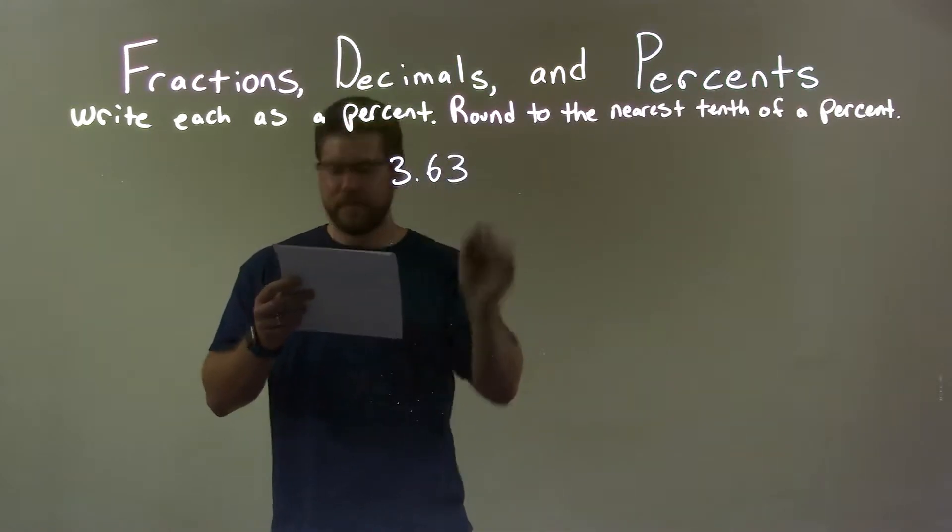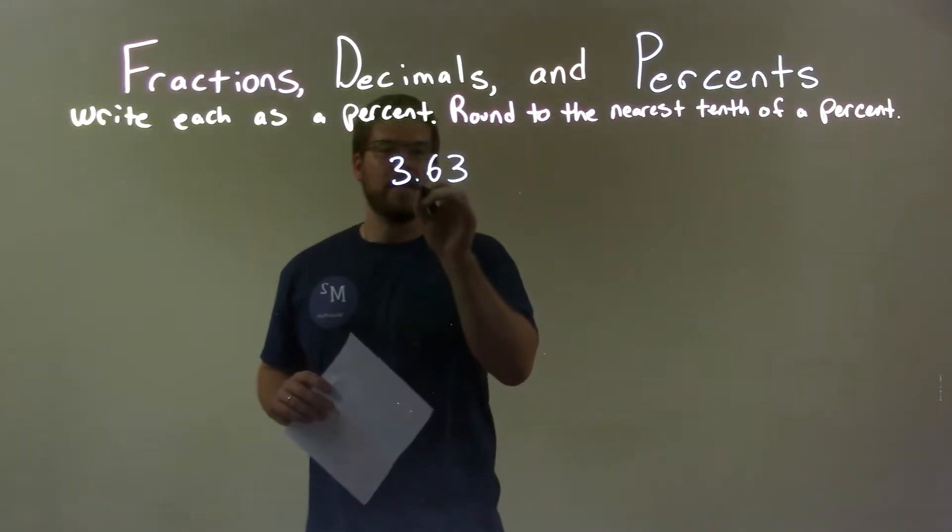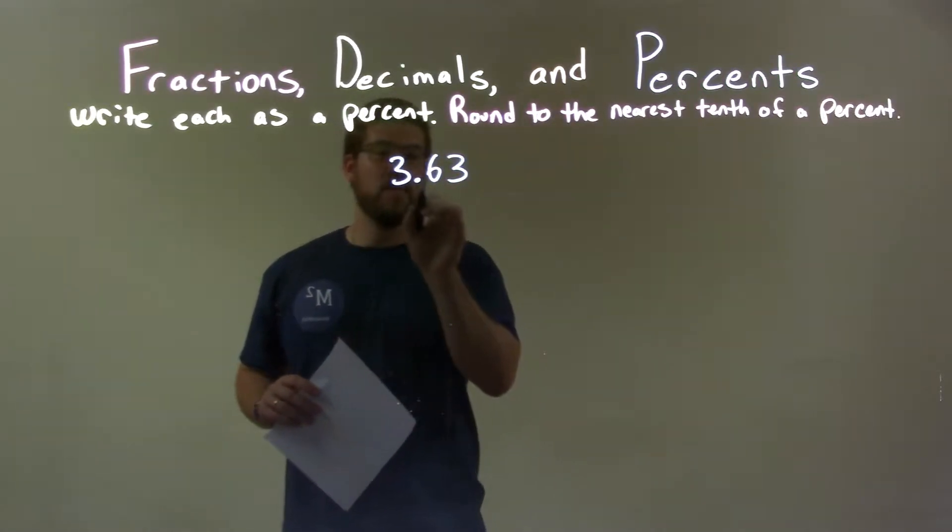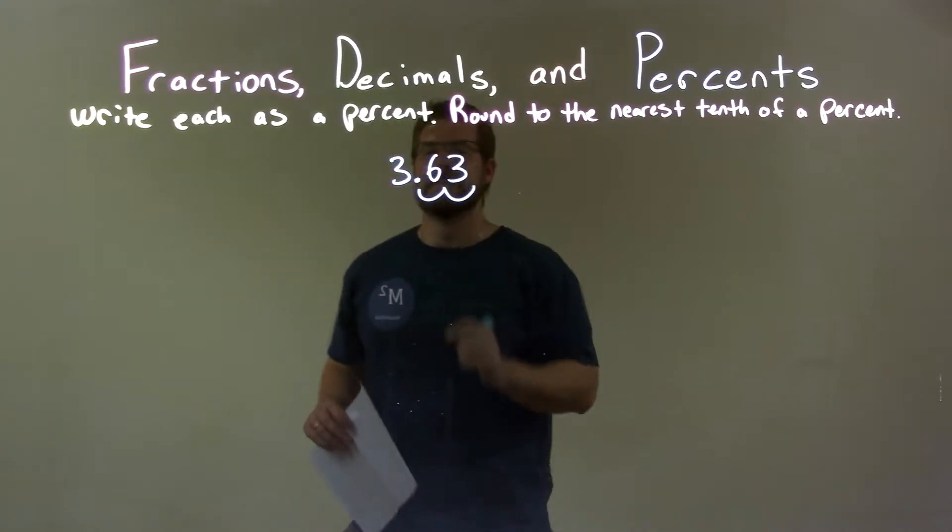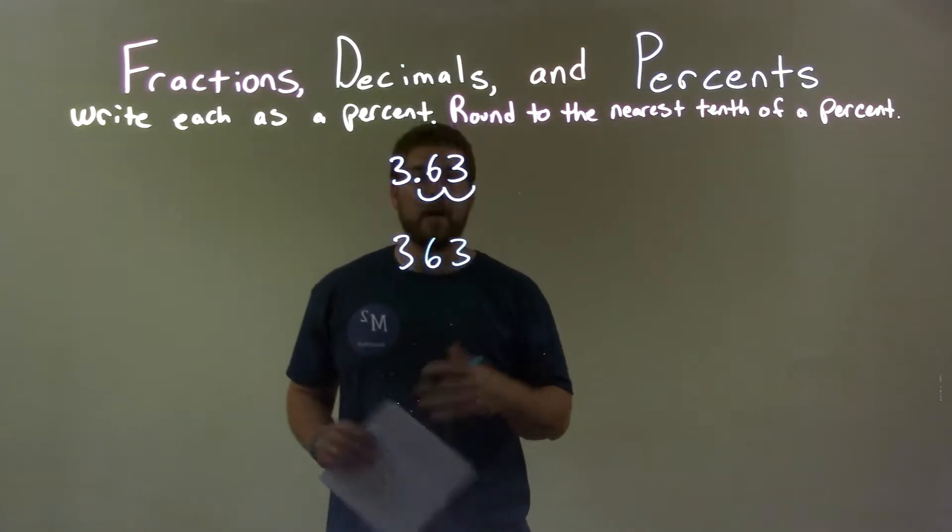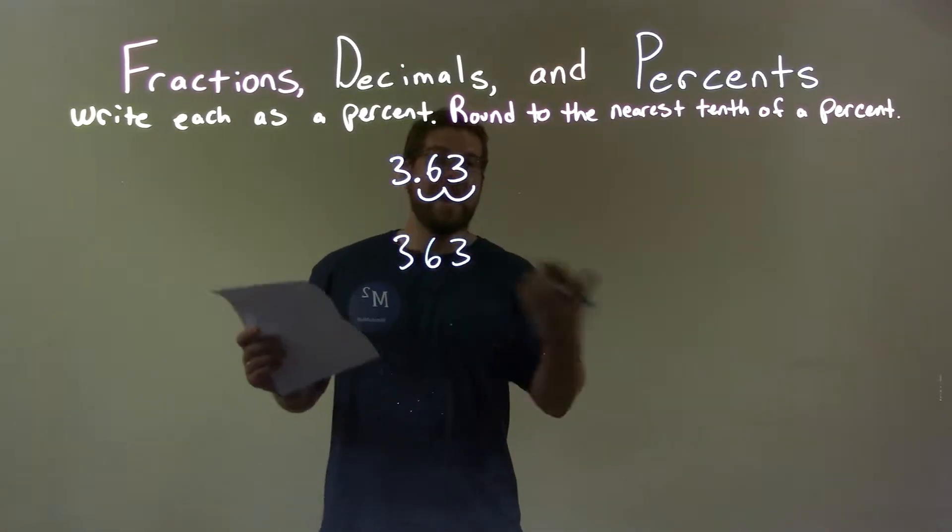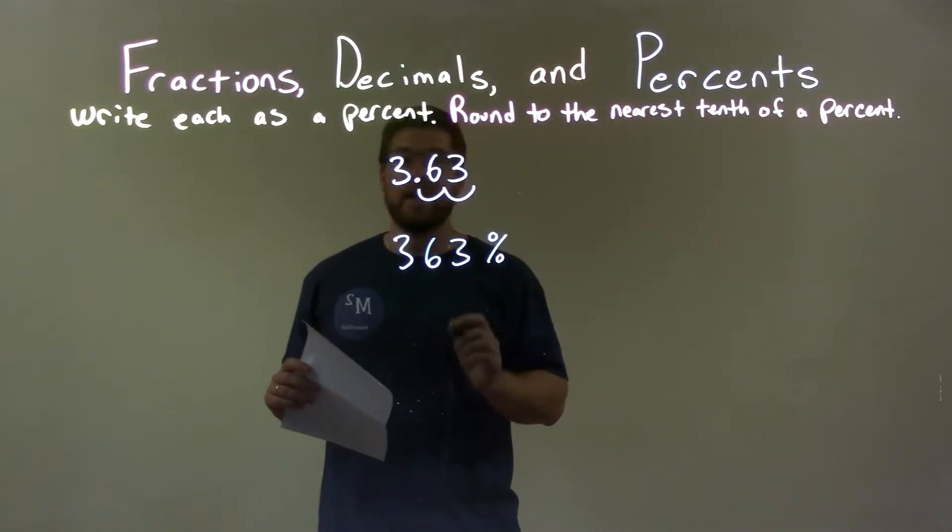3.63, okay? We have 3.63. I need to write that as a percent. Well, I take that decimal place right there and I move it two spots to the right. 1, 2. So 3.63 becomes 363. Decimal place is right there but I don't need to write it because there's nothing afterwards, so we leave it as 363. Put on a percent sign and then we're done.